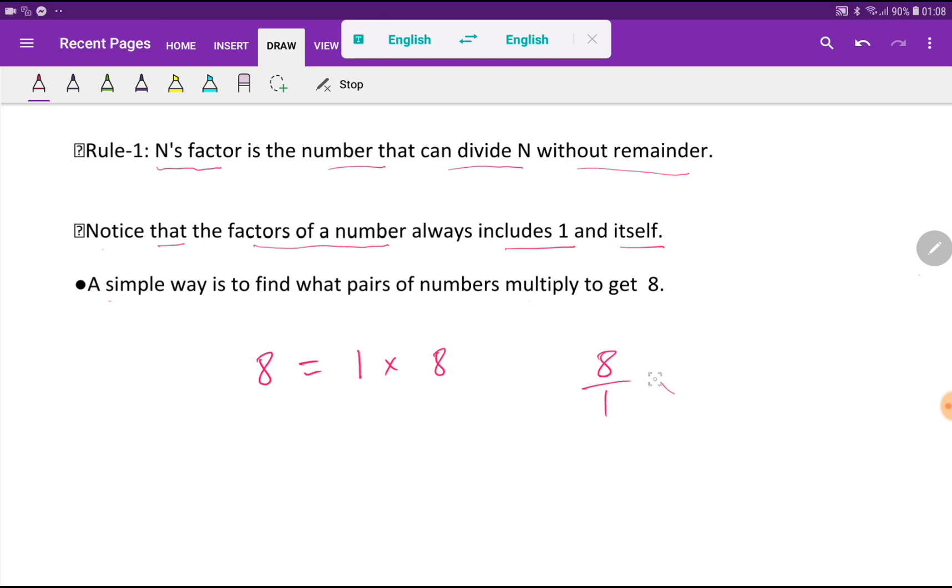If you divide 8 by 1, you will get 8. And if you divide 8 by 8, you will get 1. So here, write the lowest factor and here write the highest factor.